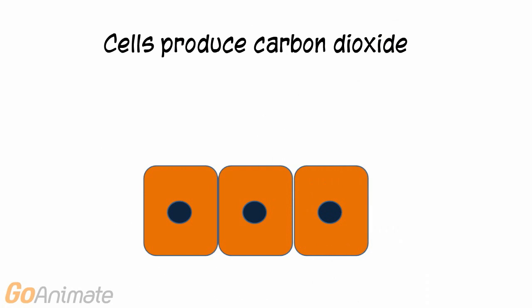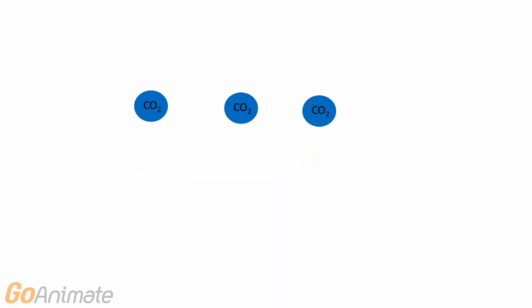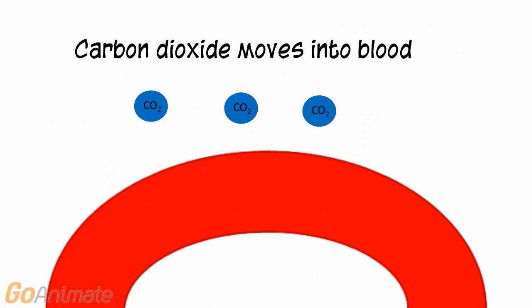The cells also produce carbon dioxide that must be carried to the lungs by way of the blood. Carbon dioxide diffuses into the blood.